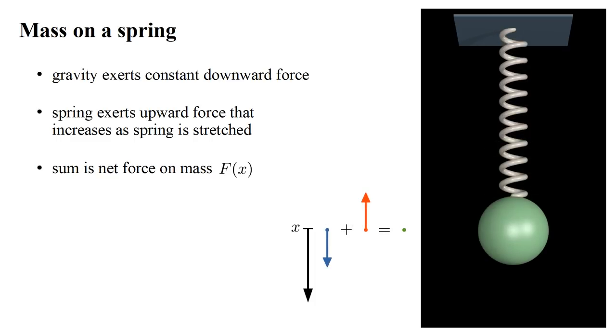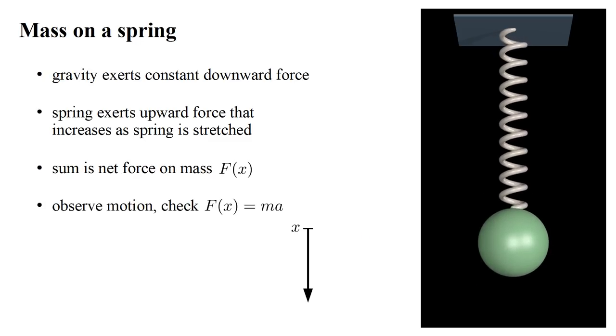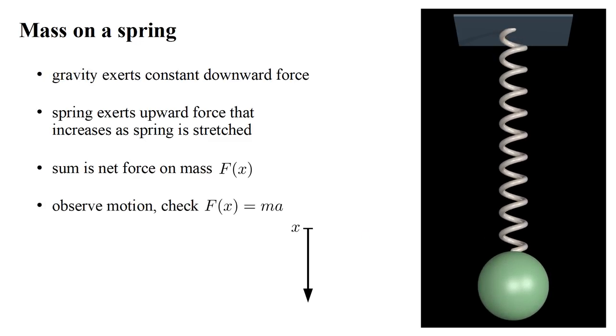At some position the net force will be zero. This is the equilibrium position where the mass can remain suspended at rest, and we'll use this as our x equals zero reference. For non-zero x values, the net force acts to accelerate the mass back toward the equilibrium position. We are going to observe the motion of a mass on a spring and see if F equals ma is valid for this system. Our first task is to determine the force law, F(x).